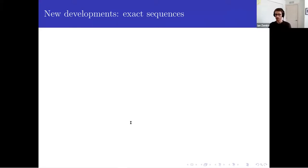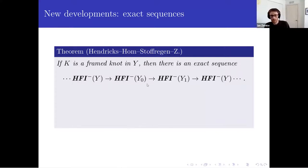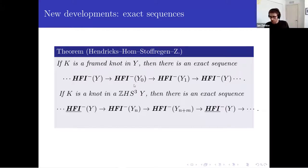Now we're going to talk about the new developments. The first thing is exact sequences. Hendricks, Hom, Stoffregen, and myself have proven a lot of the exact sequences that you would want to know. We proved that if you have a framed knot in a three-manifold, then there's an exact sequence: Y sub zero denotes the surgery with respect to the framing, and Y_1 is what you get by incrementing the surgery coefficient by one. And if you have a knot in an integer homology three-sphere, there's another version of the exact sequence which increments the surgery coefficient by M instead of just one.